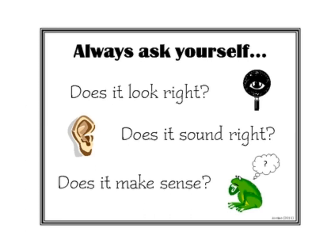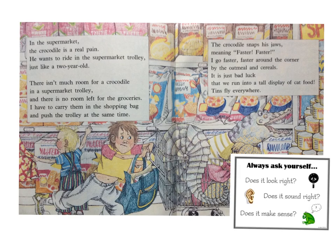The last self-monitoring strategy we're going to look at is 'does it make sense?' Let's read this page of the story. In the supermarket, the crocodile is a real pain. He wants to ride in the supermarket truck, just like a two-year-old. Think about what I did there — I made a mistake with this word. I said 'truck'; it starts with a 'tr'. And so it does look right, and it does sound right, because 'he wants to ride in a supermarket truck' is how we talk. But does it make sense? Do we have things called supermarket trucks that we use at the supermarket? No, so I need to go back and think about that one again.